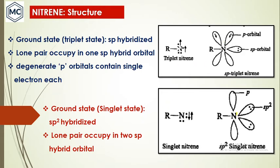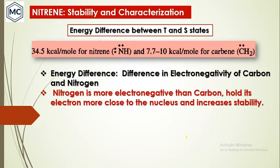Coming to the structure of singlet nitrene: in the ground state it is sp2-hybridized. One sp2 orbital is used for making the R–N bond, and two electrons occupy the other two sp2 orbitals. The remaining orbital is empty. That is the structure of singlet nitrene.